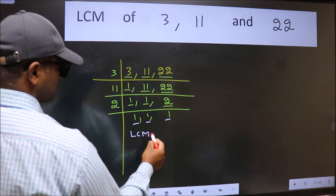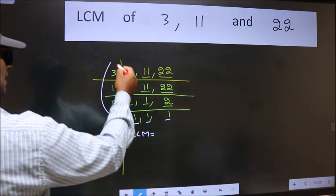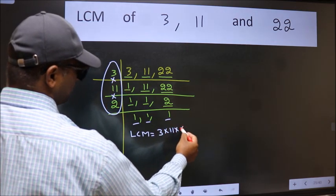So our LCM is, LCM is the product of these numbers that is 3 into 11 into 2.